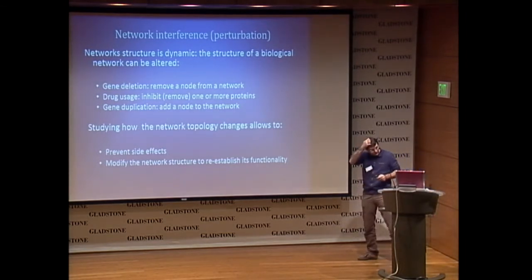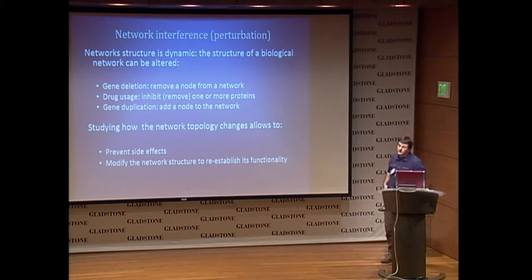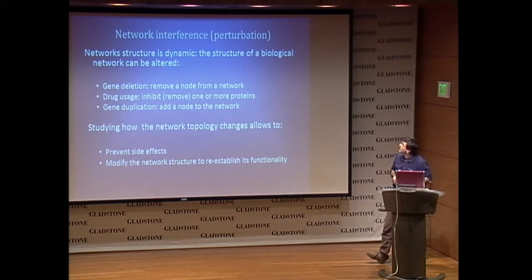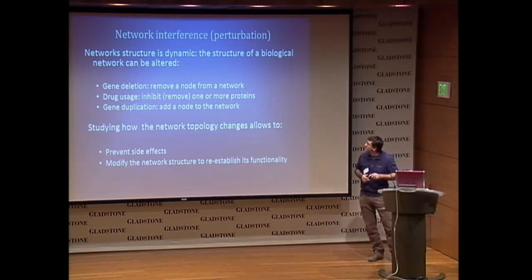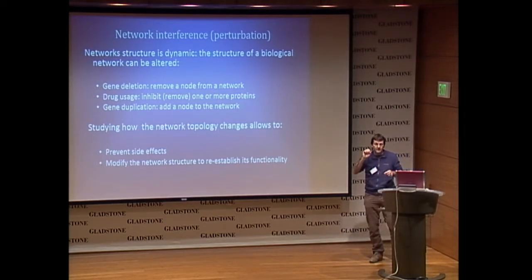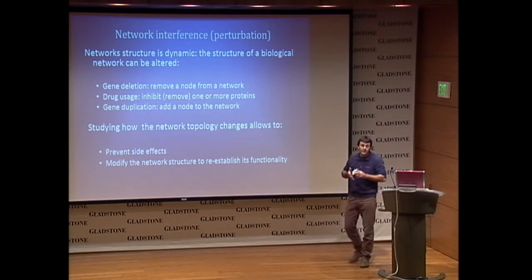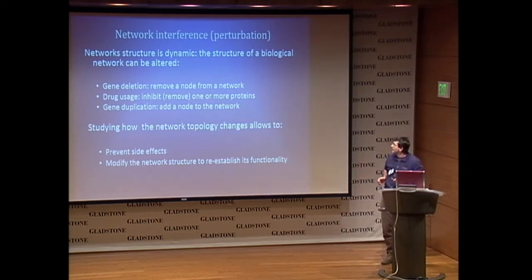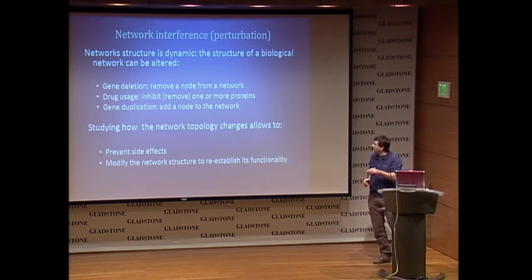The second step of the analysis. We saw that the network is dynamic — the structure is not static in time, but it can be altered by perturbations. For example, you can have gene deletion, drug usage, or gene duplication. Gene deletion means that you don't have the protein because it is not expressed, so it is like removing the node from the network. Some drugs inhibit one protein, so it is like removing it from the network. We have to study the effect of removing nodes or adding nodes to prevent side effects of drugs and to modify network structure to reestablish its functionality.